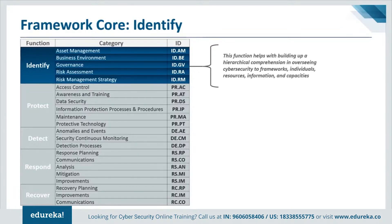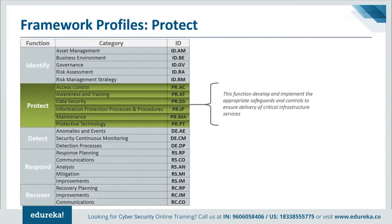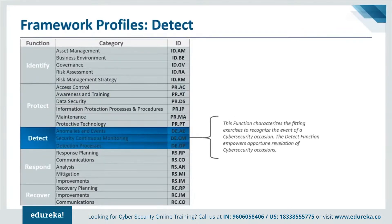The Protect function is used to develop and implement appropriate safeguards to ensure delivery of critical services. It supports the ability to limit or contain the impact of a potential cybersecurity event. Examples of outcome categories within this function include identity management and access control, awareness and training, data security, information protection processes and procedures, maintenance, and protective technology. The Detect function is used to develop and implement appropriate activities to identify the occurrence of a cybersecurity event. It enables timely discovery of cybersecurity events. Examples of outcome categories include anomalies and events, security continuous monitoring, and detection processes.